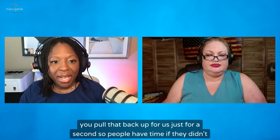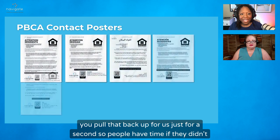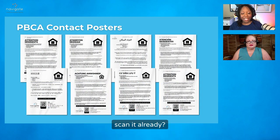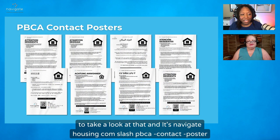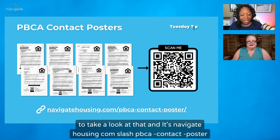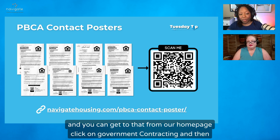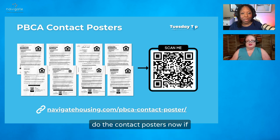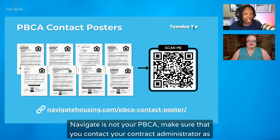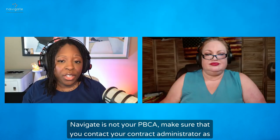You can scan the QR code that was on your screen. The URL is navigatehousing.com/PBCA-contact-poster, and you can also get to that from the homepage — click on Government Contracting and then Contact Posters. Now, if Navigate is not your PBCA, make sure that you contact your contract administrator to get the contact information that you need.